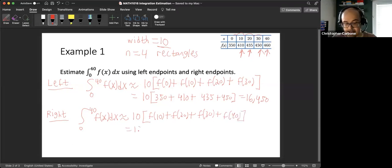So we're going to have 10 times. At 10, the function takes on 410. At 20, it takes on 435. At 30, it takes 450. And then at 40, it takes 460. So if we add up this sum, multiply it by 10, we should get 17,550.